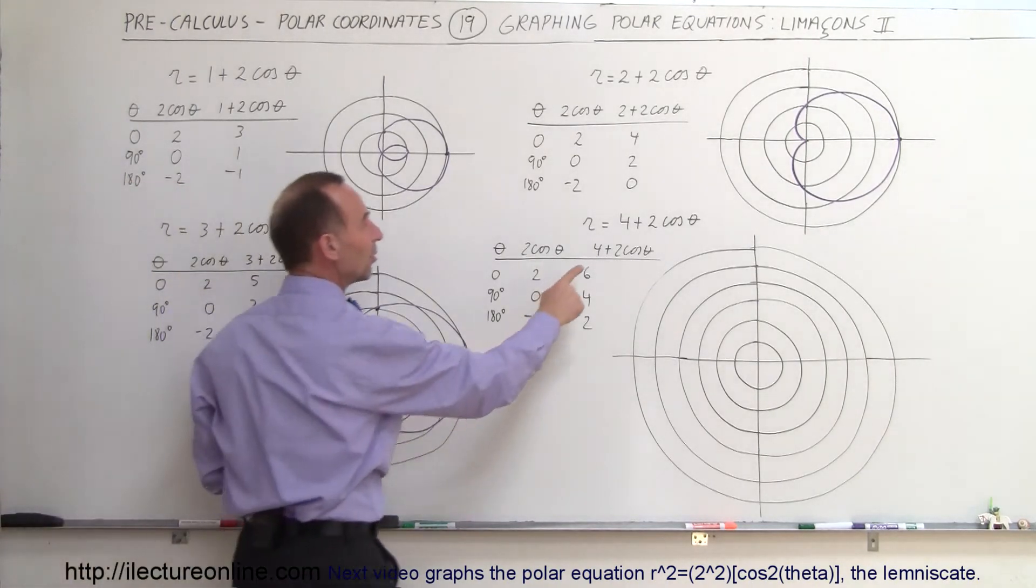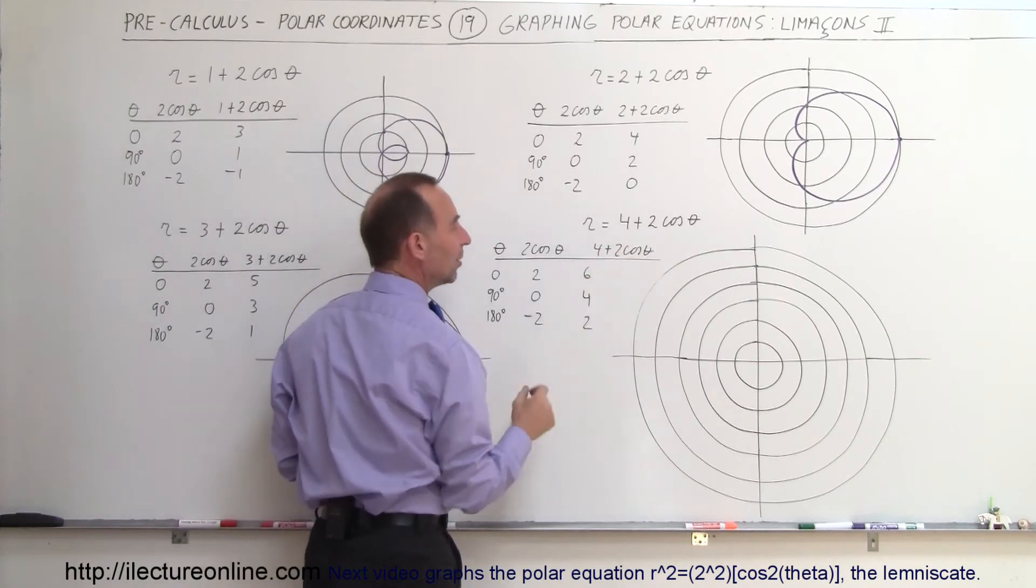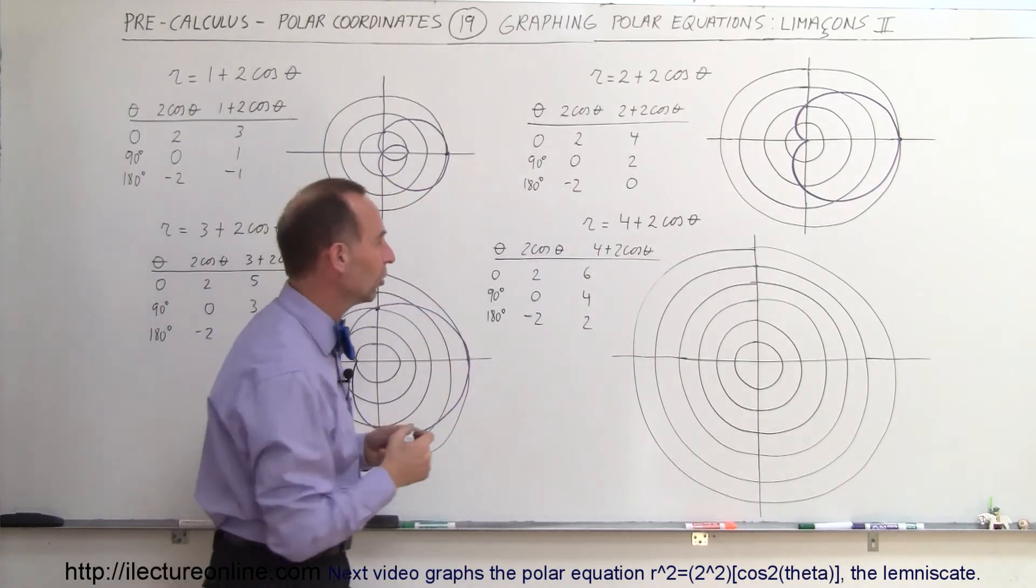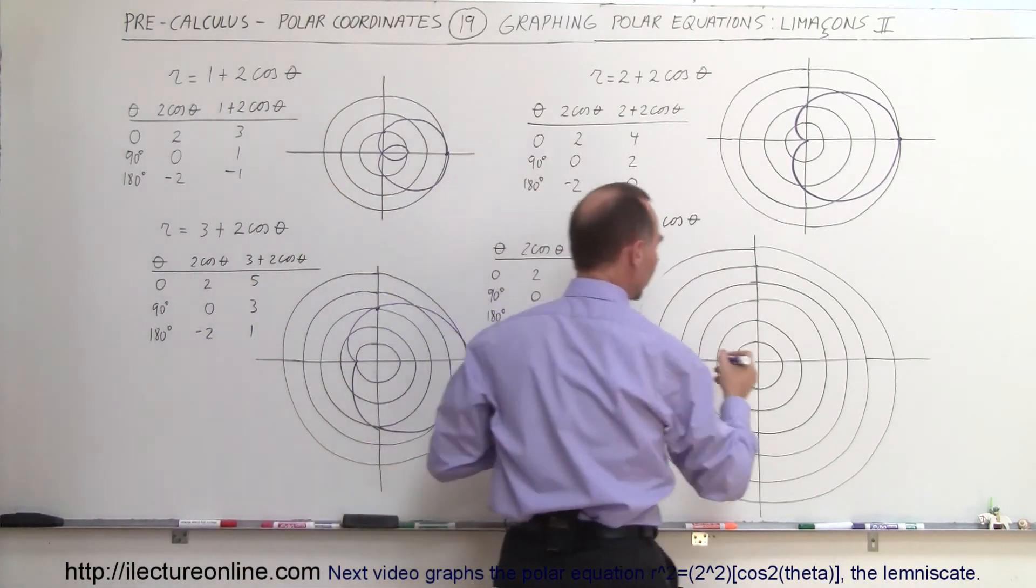When we have something where the value here is at least twice the number here, you don't get any indentation at all. Notice that at the 0 angle, we're equal to 6.